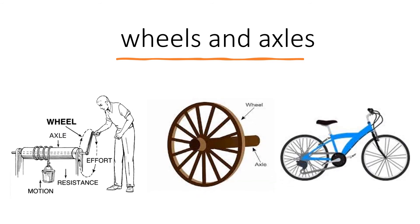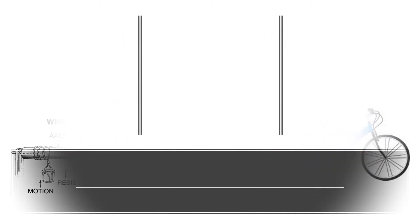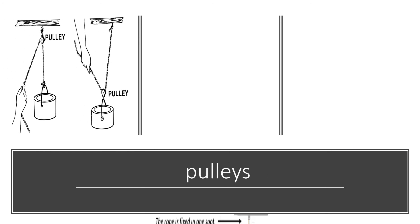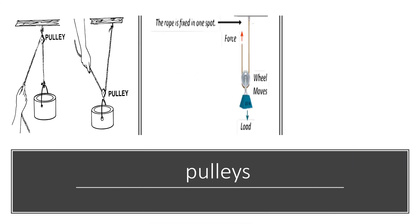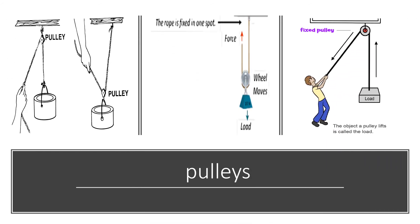Wheels and axles. Examples of wheels and axles include a machine used to retrieve water from a well or tank, a wheel from a cart or wagon, and a bicycle. The wheel axle involves effort, resistance, and motion.